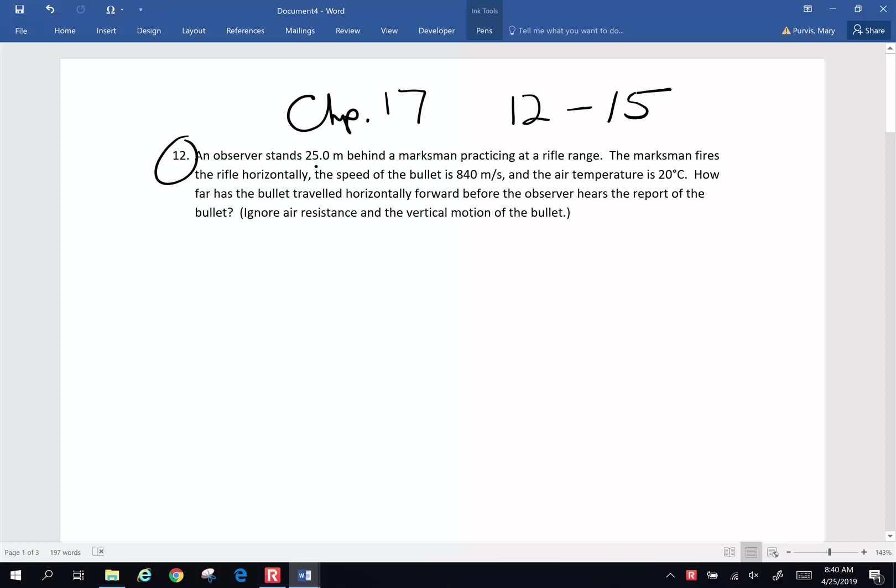An observer stands 25 meters behind a marksman practicing at a rifle range. The marksman fires a rifle horizontally. The speed of the bullet is 840 meters per second, and the air temperature is 20 degrees Celsius. How far has the bullet traveled horizontally forward before the observer hears the report or the sound of the bullet? Ignore air resistance and ignore any vertical or downward motion of the bullet.